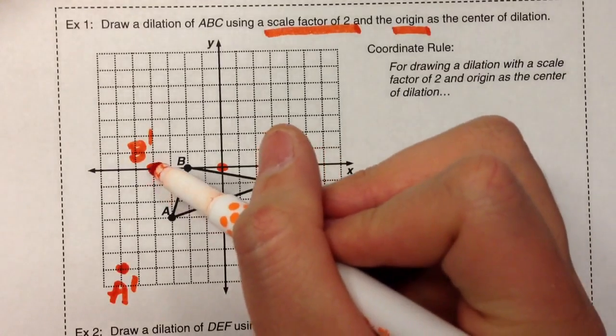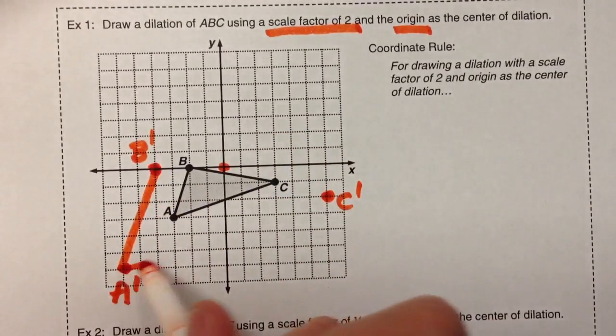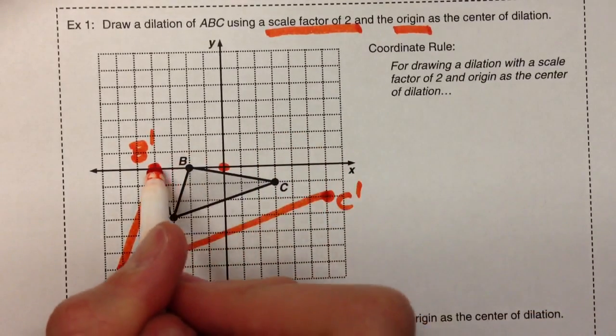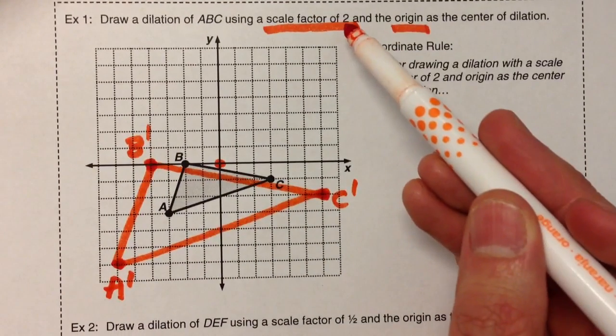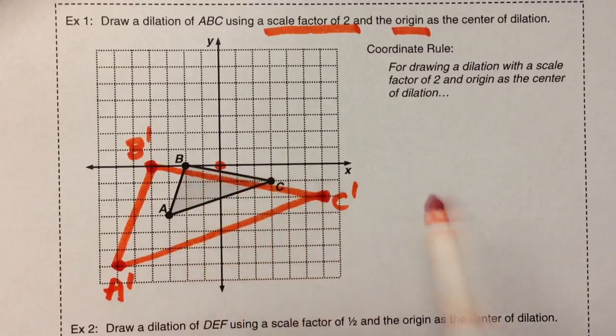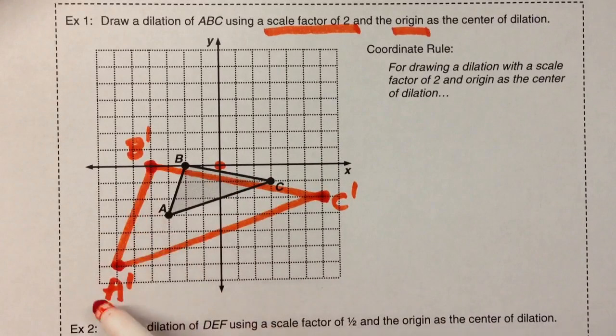When you connect the dots, there is your new shape. And notice, it has a scale factor of two, so its side lengths are twice as long as the original side lengths.